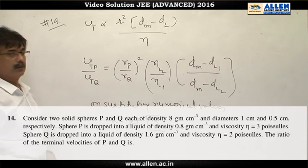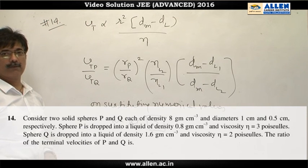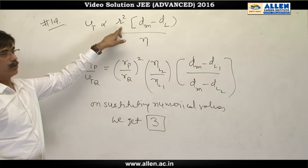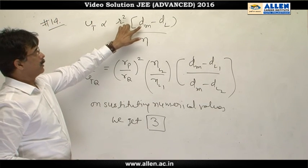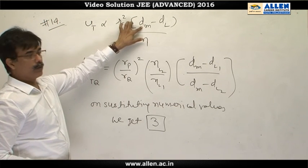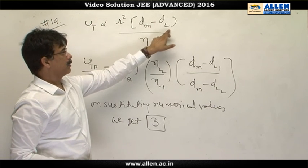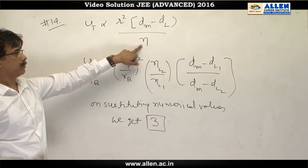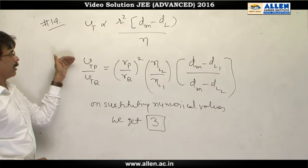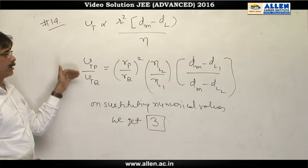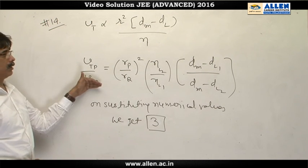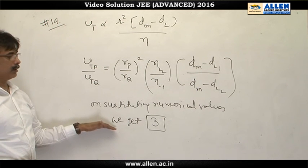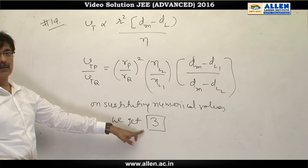Question number 14. This question is based on the formula of terminal velocity. The terminal velocity depends on the radius of the spheres, difference in density of sphere and liquid, and coefficient of viscosity. On comparing the terminal velocity for p and q, taking ratio and substituting the numerical values, we get our answer as 3.